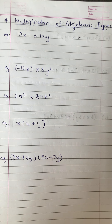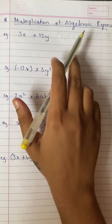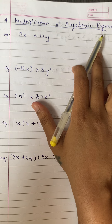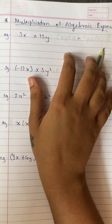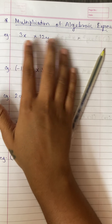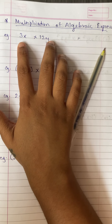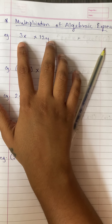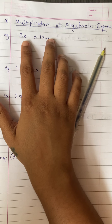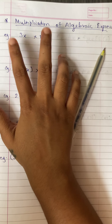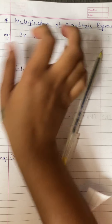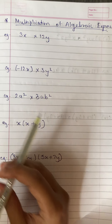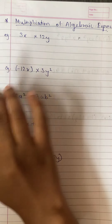Now, students, let us see multiplication of algebraic expressions. Multiplication is very simple. In multiplication, you don't have to see the variable. In addition, we had to see the variable. But in multiplication, you have to just combine everything — multiply everything together.